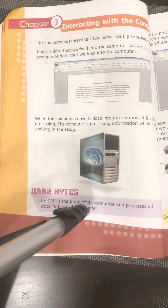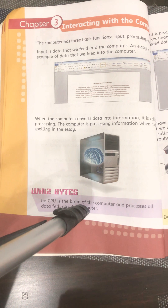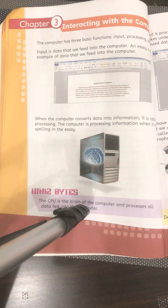In the previous lesson we started chapter number three, which was about interacting with a computer. It covered the three basic functions a computer performs: input, processing, and output. Input means to enter data into the computer and give instructions to the computer with the help of input devices including the keyboard and mouse.